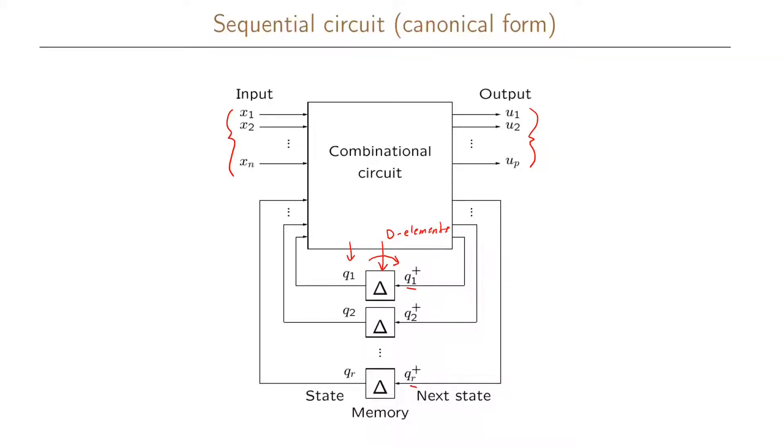And now we're going to replace these d elements with just a delta here. And the delta means that this is a separation between the q variables and the q plus variables that will allow us to see our q variables as our memory.